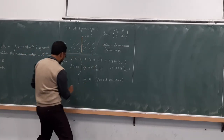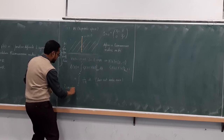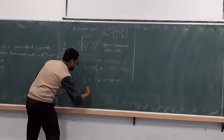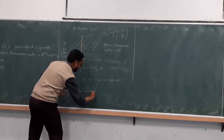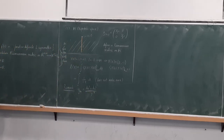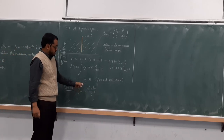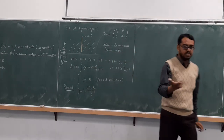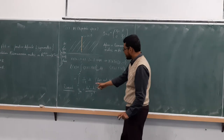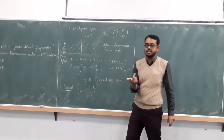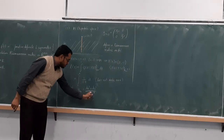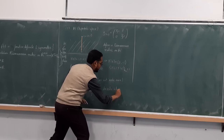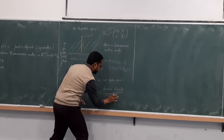A notational remark: sometimes in books they write the metric as g = (dx² + dy²)/y², where dx² means dx⊗dx and dy² means dy⊗dy — it is a symmetric tensor, not dx∧dx. This notation means the same as the matrix description. The metric is a symmetric 2-tensor, not a differential form (which would be skew-symmetric).